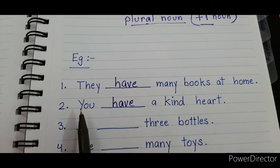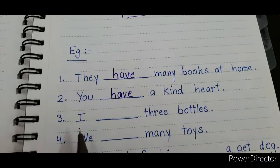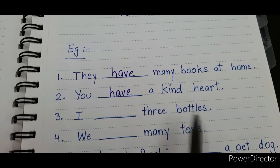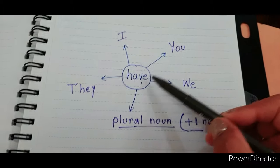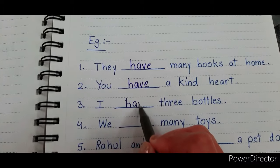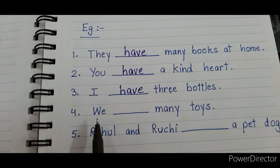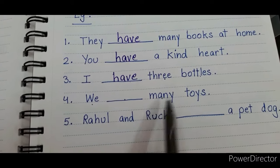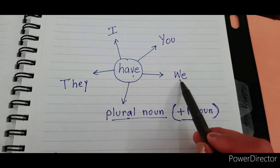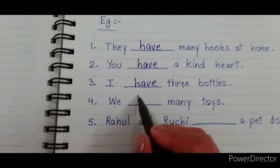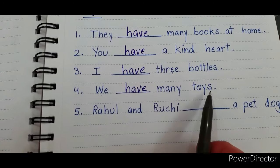Always remember to read the sentence again after filling in the blank — it is very important. 'I ___ three bottles.' With 'I', we use 'have': 'I have three bottles.' Next: 'We ___ many toys.' Check the flow chart — yes, 'we' is there. So: 'We have many toys.'